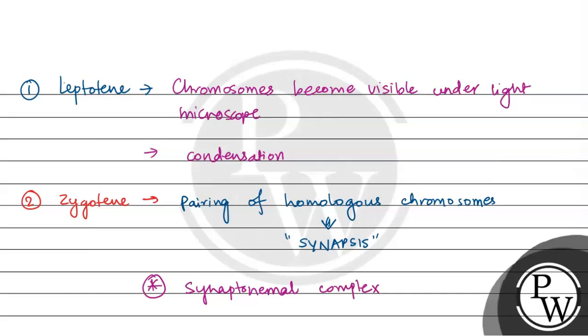The third stage is pachytene stage. In the pachytene stage, the four chromatids of the bivalent become visible as tetrads, they become completely visible as tetrads.